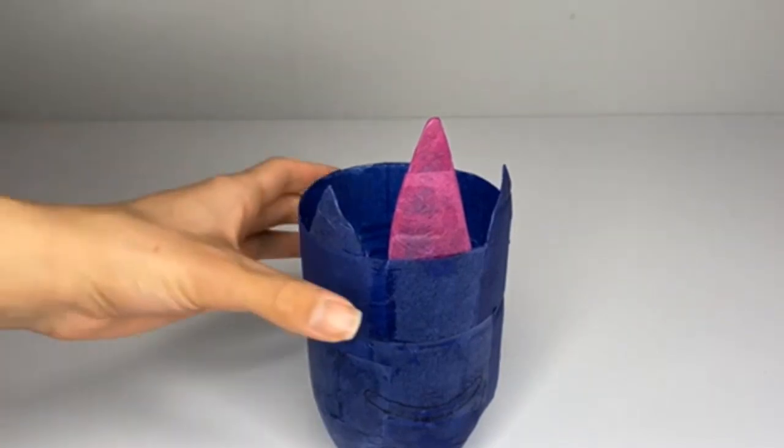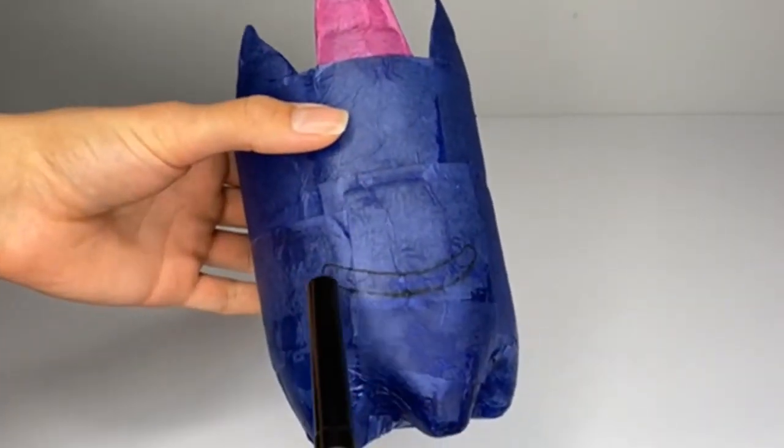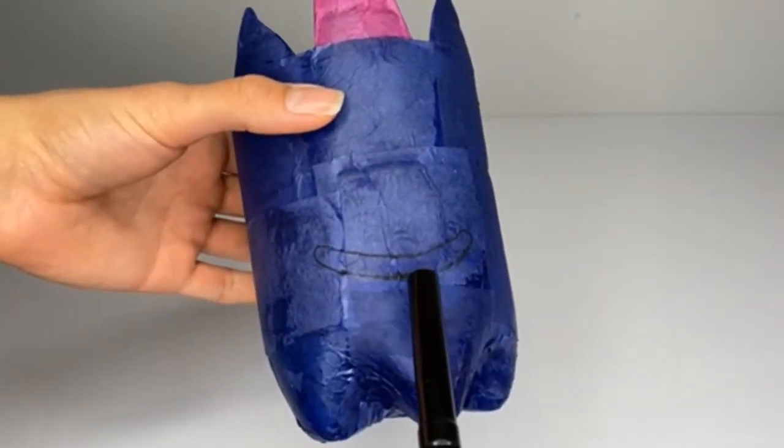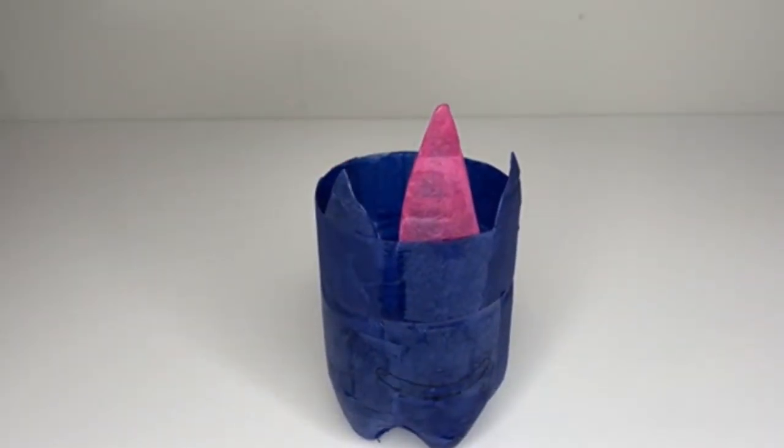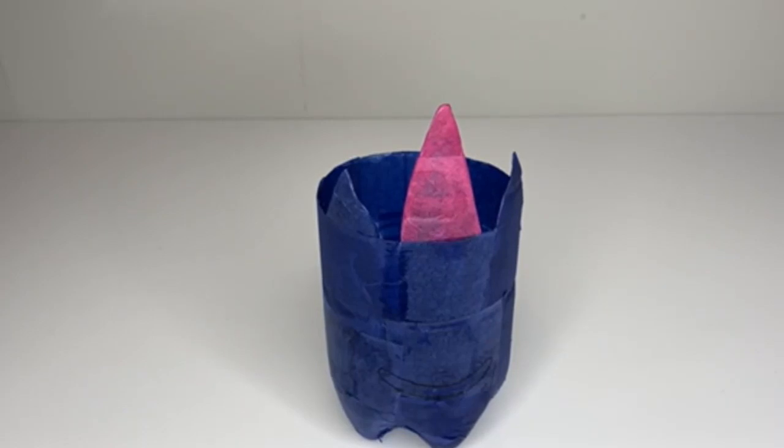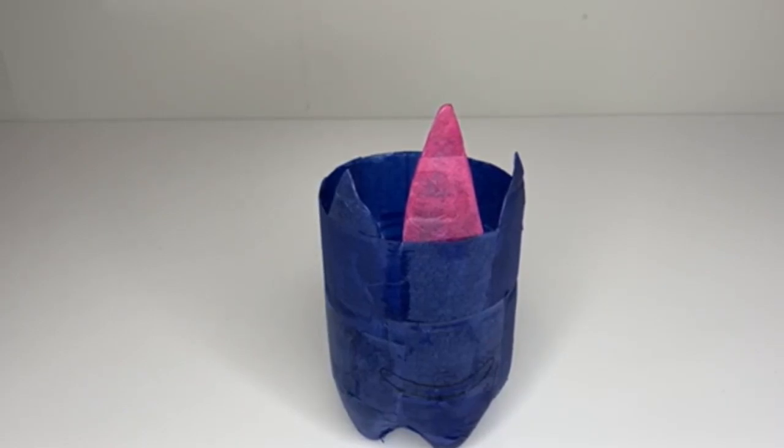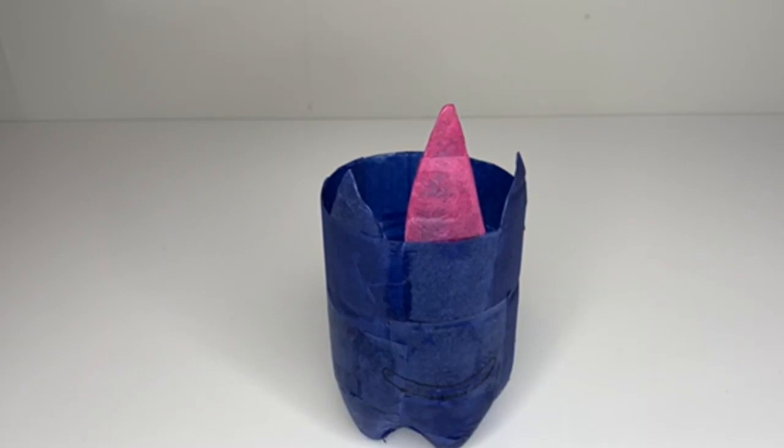Now that everything is dry, you will need to add a mouth to your character. Draw this on using a black marker pen roughly 5cm from the bottom and make it 5cm wide. Then take a pair of scissors or something sharp like a craft knife and cut this out. This step can be quite tricky so you may want to ask an adult to help you.